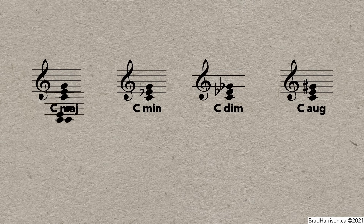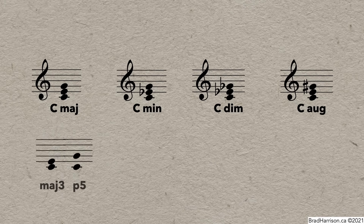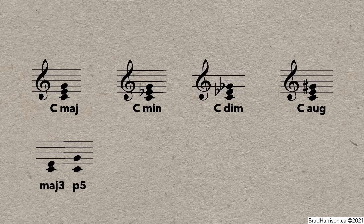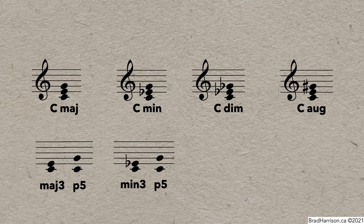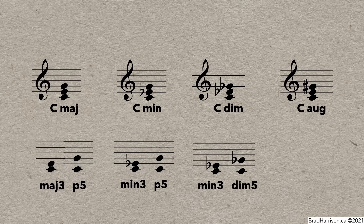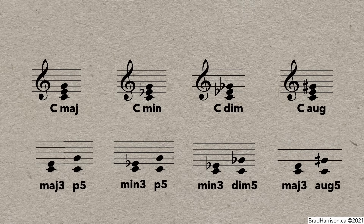A major triad is characterized by the intervals of a major third and a perfect fifth. A minor triad is just one note different — it has the same perfect fifth, but a minor third instead. The diminished triad has the same minor third as the minor triad, but the fifth is diminished. Finally, the augmented triad has a major third, but the fifth is augmented.